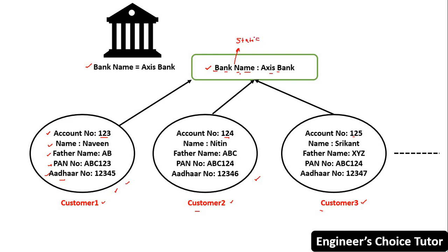Remember this point: the bank name value is not varying from object to object. For all the customers, the bank name is common — that is Axis Bank. So why should we declare the bank name property as an instance variable? It should be static because static will be loaded only one time at the time of class loading.